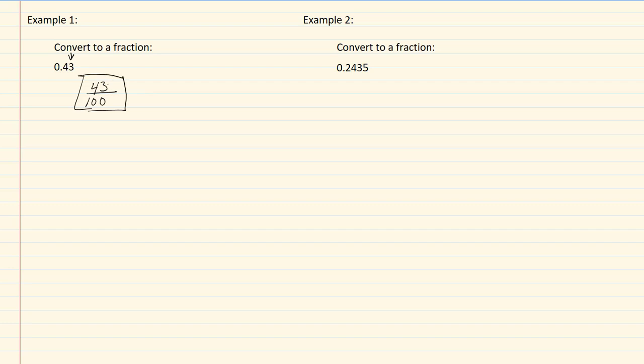If 43 was divisible by two or five, we would have needed to reduce it. Let's take a look at example two.